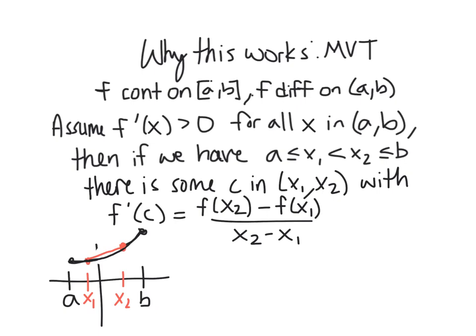Then the mean value theorem says there's some C in this open interval between x1 and x2, such that f prime of C is the slope of this secant line I have drawn in red. So my C would probably be somewhere along here, where you see this slope looks parallel there.